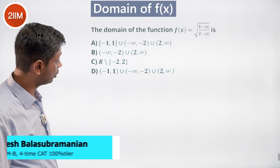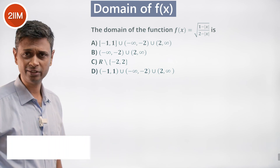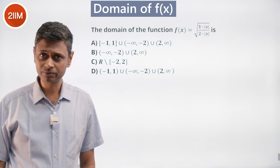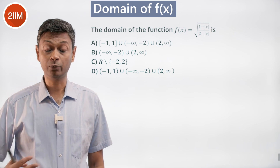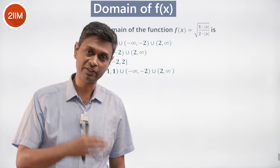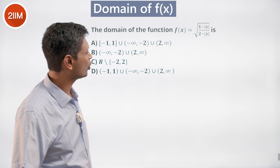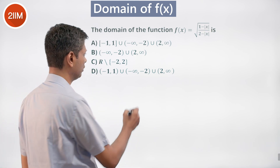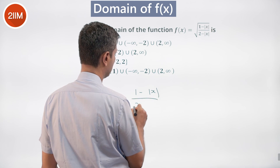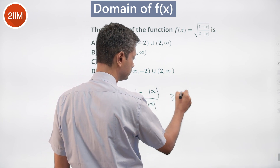The domain of the function f(x) = √(1 - |x|) / (2 - |x|). The domain is the set of values of x for which the function is defined. Since we have a square root, we are effectively solving for (1 - |x|) / (2 - |x|) ≥ 0.